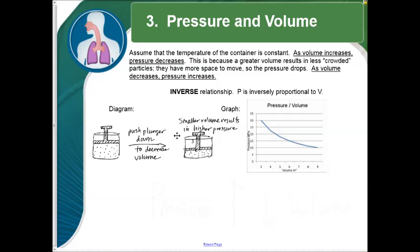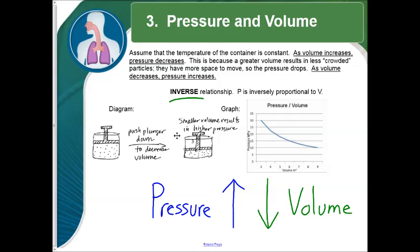Okay, our last relationship is pressure and volume. If we assume that the temperature of the container is constant, meaning we cannot change anything but pressure and volume, if we increase the volume, we will decrease the pressure. This is because a greater volume results in less crowded particles. They have a lot more space to move around, so the pressure drops. If we decrease the volume, the pressure would actually increase. And for our diagram here, we have a plunger that we can push down on our gas particles. They will run out of room, and the pressure will increase because of it. Now this is the only one that is an example of an inverse relationship. Key point to remember here, if I increase pressure, I will get a decrease in volume.